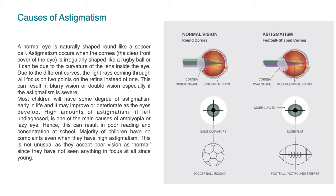Most children will have some degree of astigmatism early in life, and it may improve or deteriorate as the eyes develop. High amounts of astigmatism, if left undiagnosed, is one of the main causes of amblyopia, or lazy eye.